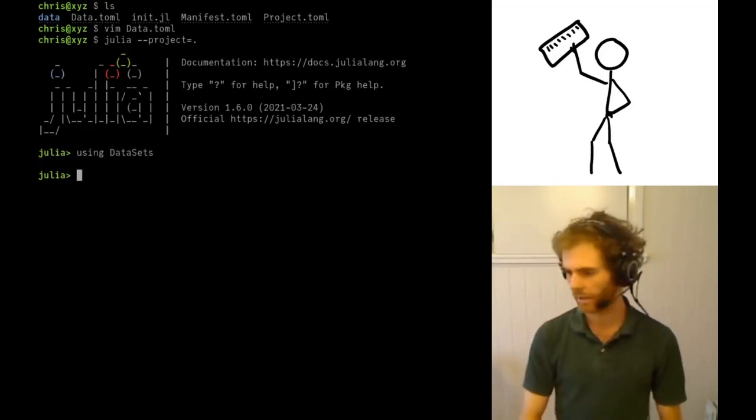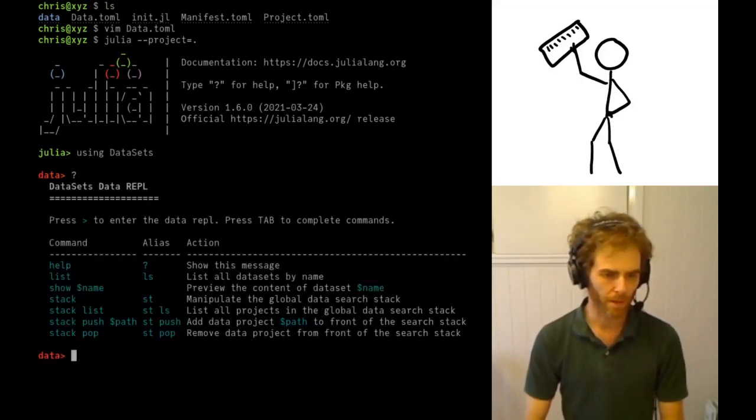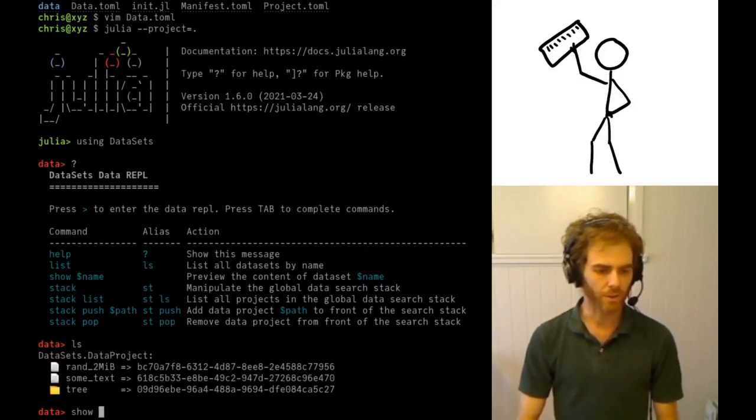So let's open up Julia with the current directory as the project. We'll load the library and let's have a quick look at the data REPL. So the REPL gives you a quick overview of which datasets you have. So here we've got these three datasets and we can preview those with show.